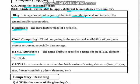Next is HTML attributes. The name attribute specifies a name for HTML elements — for example, title and style. HTML stands for Hypertext Markup Language, which is used in web pages. When we use a web page, we use different attributes.